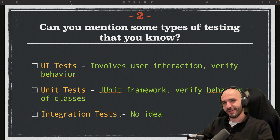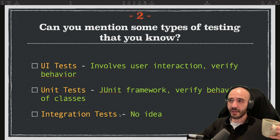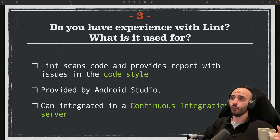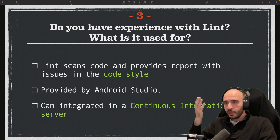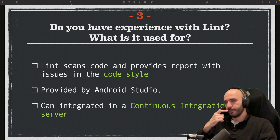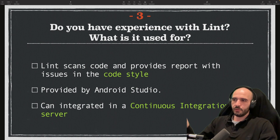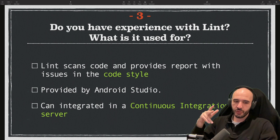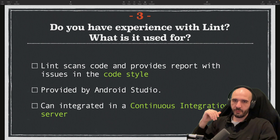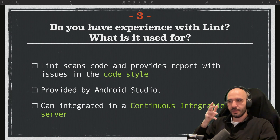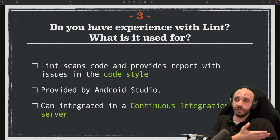Moving on: do you have experience with lint and what is it used for? Lint scans your code and provides a report that includes issues with your code style. There's already a linter inside Android Studio that runs as you're writing code — it suggests things like moving a lambda outside parentheses if it's the last argument to a function. You'll see a yellow squiggly line — that's the linter.